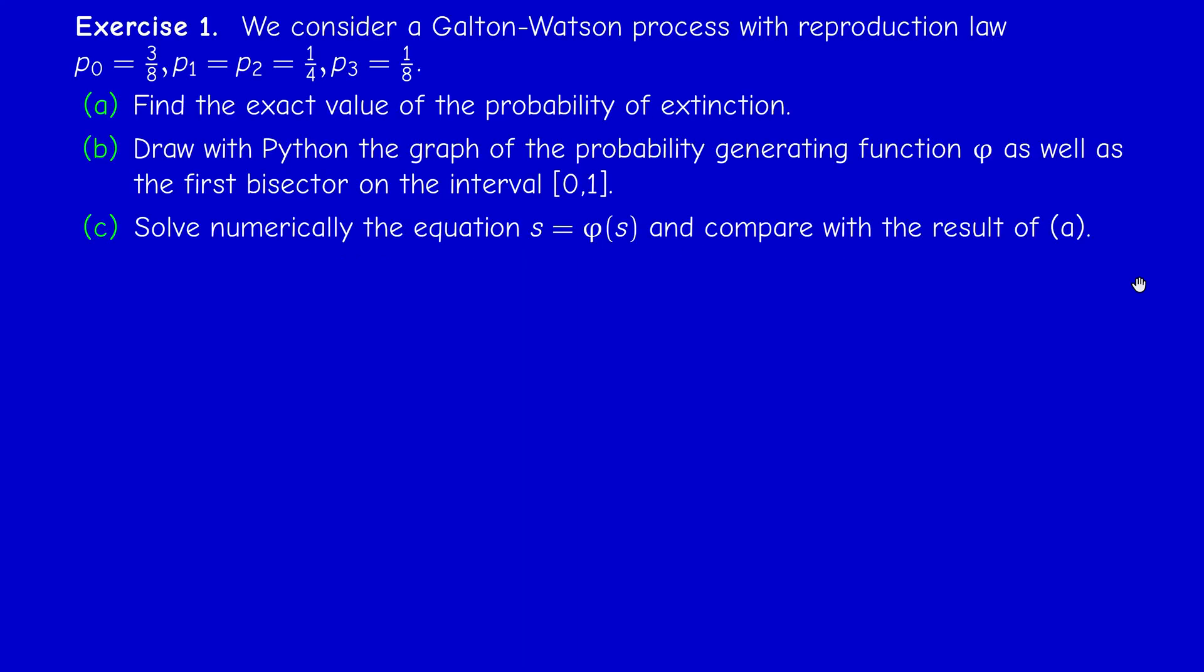So consider a Galton-Watson process with the reproduction law p0 equals 3 over 8, p1 equals p2 equals 1 over 4, and p3 equals 1 over 8. This is like the riddle actually. We have three cases but with different probabilities. Either the alien dies, or he reproduces one or two offsprings with equal probability, or three offsprings.